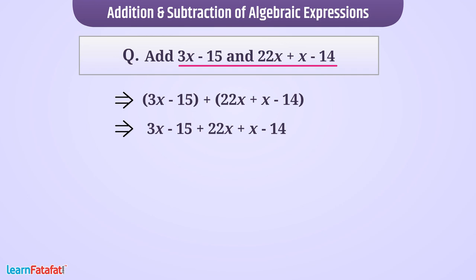Then we rearrange the terms such that like terms come closer: 3x plus 22x plus x minus 15 minus 14. We can take algebraic parts common: x multiplied by (3 plus 22 plus 1) minus 15 minus 14.